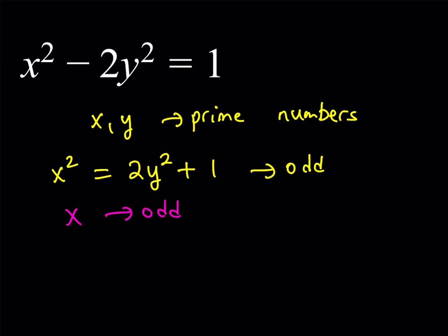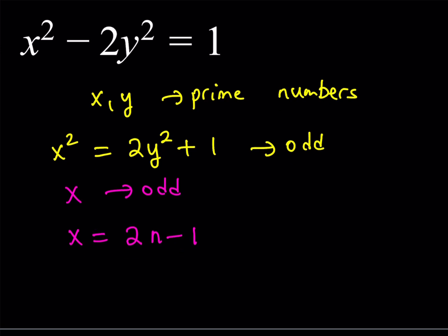One of the great things when you're solving an equation with integer solutions is that if you know whether one of the variables or both are even or odd, then you can actually replace them with something. We can use, for example, in this case, we can use x equals 2n minus 1, where n is just an integer. Well, in this case, we're looking for prime solutions, so n would have more restrictions on it. But anyways, we can just write x as 2n minus 1.